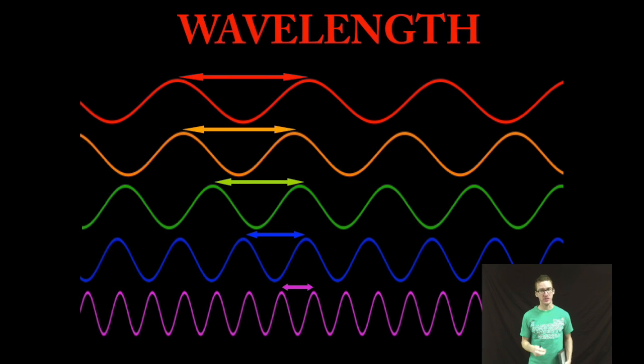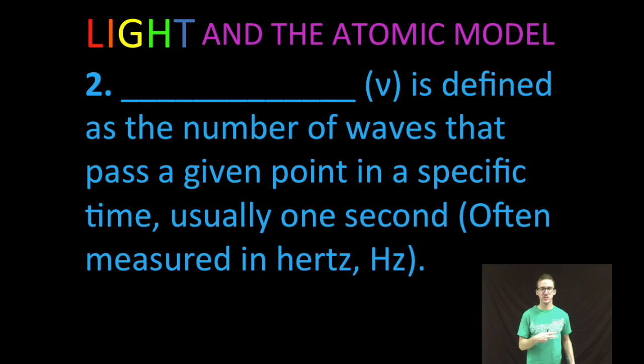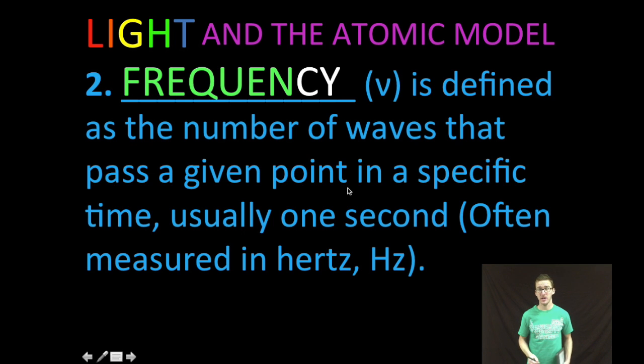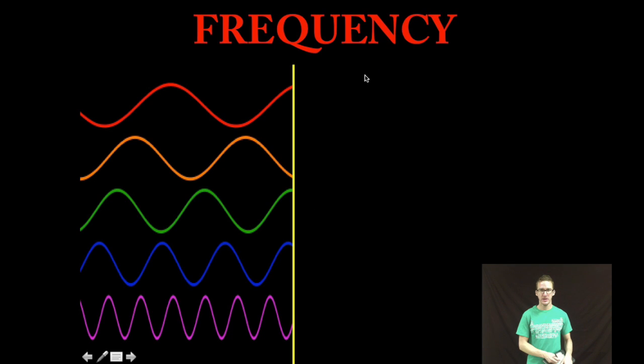The second measurable property of light behaving as a wave is frequency. And we use the Greek letter nu to represent frequency. It is defined as the number of waves that pass a given point in a specific time, usually one second. We often measure that in hertz. So here we go. I've got a fixed point. I'm going to count for one second.